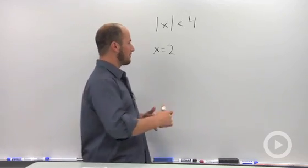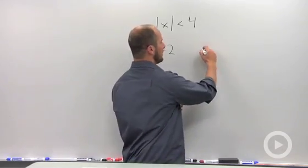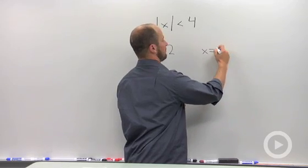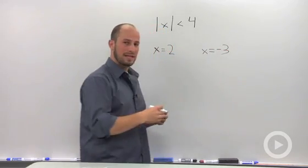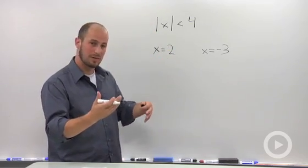What if we think about negative numbers? Remember the absolute value is going to make this negative number positive. So if we say x is equal to negative 3, the absolute value of that turns it positive. 3 is less than 4, this will work.